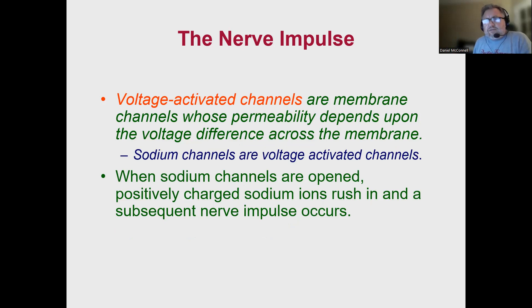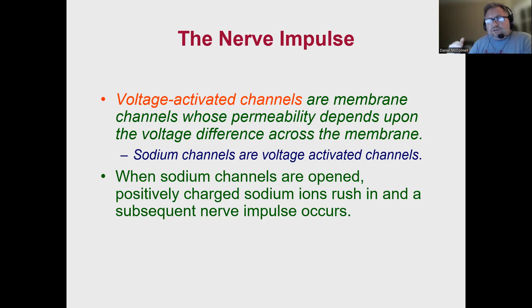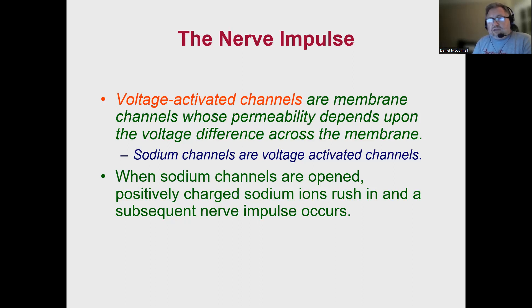What channels are involved in the action potential? We have to talk about voltage-activated channels. These protein channels in the cell membrane are only activated when the internal voltage of the cell hits a certain voltage — that critical voltage level is the threshold of the cell. Once the neuron hits that critical threshold level because a little bit of sodium comes in and raises the internal voltage up to that critical level, that's going to activate these voltage-activated channels. And that causes all of that sodium to come rushing in because these voltage-activated channels are sodium channels — they only let sodium pass through.